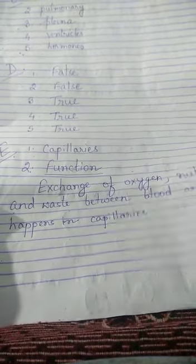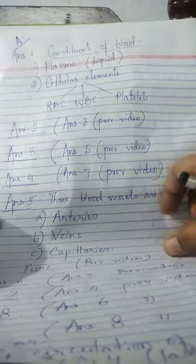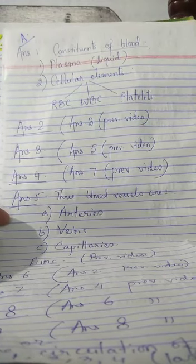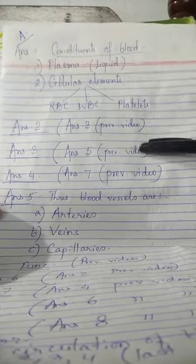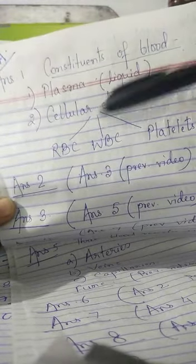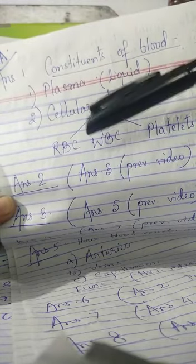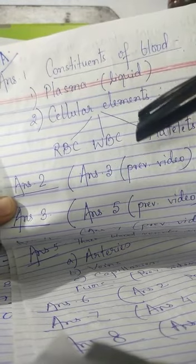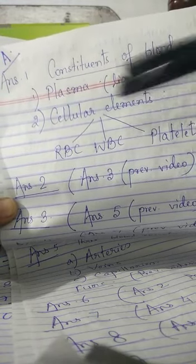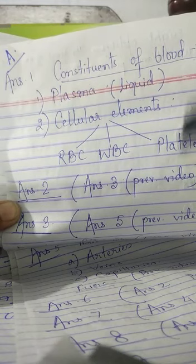Now let us move to answer the following questions. They have just changed the sequence of the questions. So now the first question is: name the constituents of blood. Answer number one — constituents of blood are: first is plasma, which is liquid, and second is cellular elements. Cellular elements are of three types: RBC or red blood cells or erythrocytes, WBC or white blood cells or leukocytes, and platelets or thrombocytes. This is answer number one: what are the constituents of blood.